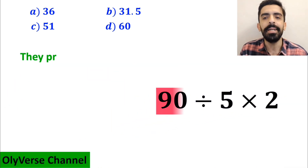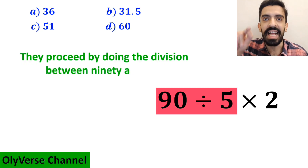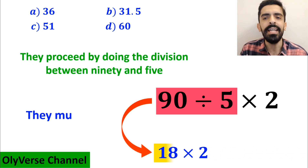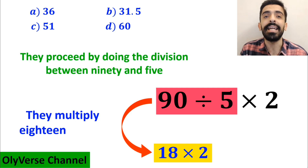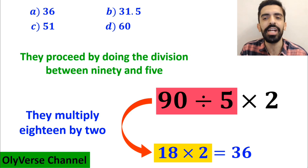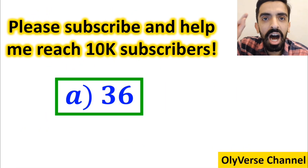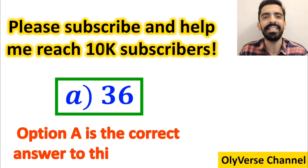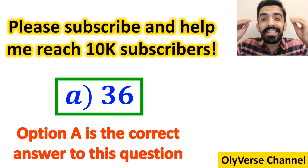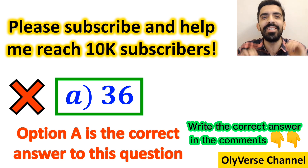Then they proceed by doing the division between 90 and 5, which gives them 18 times 2. And finally they multiply 18 by 2, which ends up with the answer 36. Without any hesitation they quickly say that option A is the correct answer — however, that's definitely wrong.